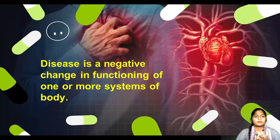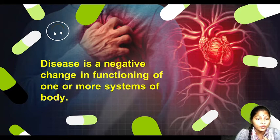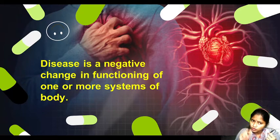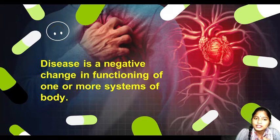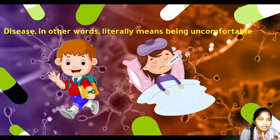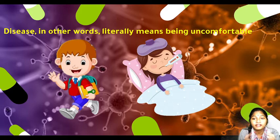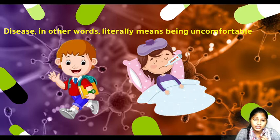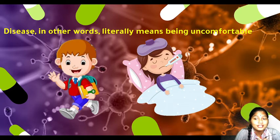Now, what is disease? We say 'I have this illness' — so what is a disease? Disease is a negative change in the functioning of one or more systems of the body. Our body has different organ systems and organs. If one or more systems are not functioning properly, it means we are suffering from a disease. In other words, disease literally means being uncomfortable — dis-ease means discomfort. For example, if your health is poor and you go to school, you won't be able to study — you'll feel uncomfortable, you can't sit properly, your nose hurts, your head hurts — you are in a state of discomfort. This state is called disease.